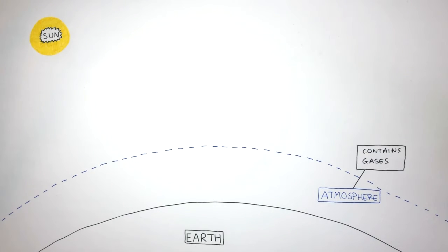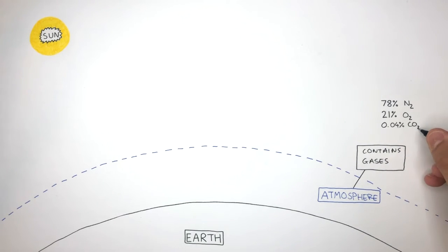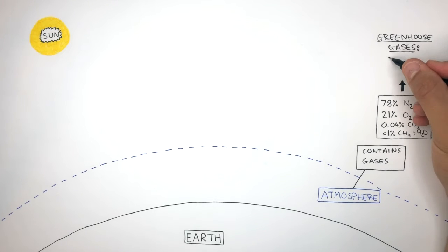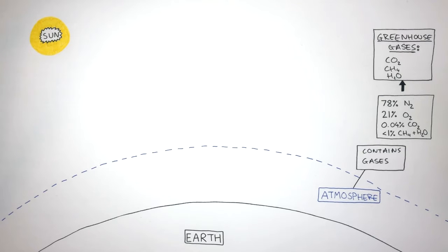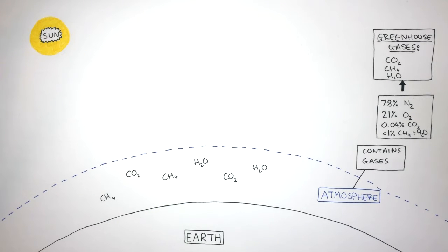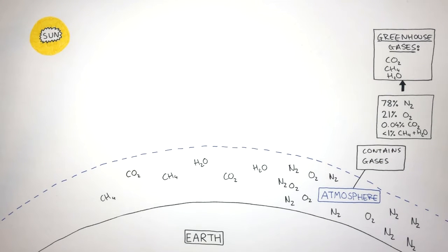Earth's atmosphere is made up of 78% N2 (nitrogen), 21% O2 (oxygen), 0.04% CO2 (carbon dioxide), and less than 1% CH4 (methane) and H2O (water vapour). The greenhouse gases are carbon dioxide, methane, and water vapour. Oxygen and nitrogen are not greenhouse gases. I'm writing the greenhouse gases on the left, and oxygen and nitrogen on the right.